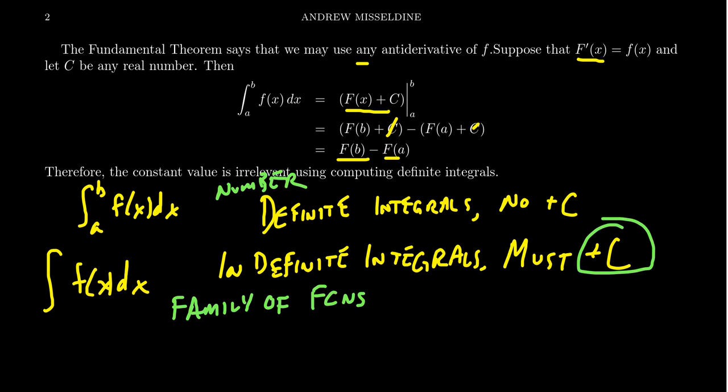A second remark: the Fundamental Theorem of Calculus does not give us the definition of the integral. The definite integral is the area under the curve — it's a number, and it's a limit of a Riemann sum. That's the definition. The Fundamental Theorem of Calculus gives us a tool to calculate that area using antiderivatives. Definite integrals are limits of Riemann sums, and that distinction will be very helpful as we work with definite and indefinite integrals in the future.